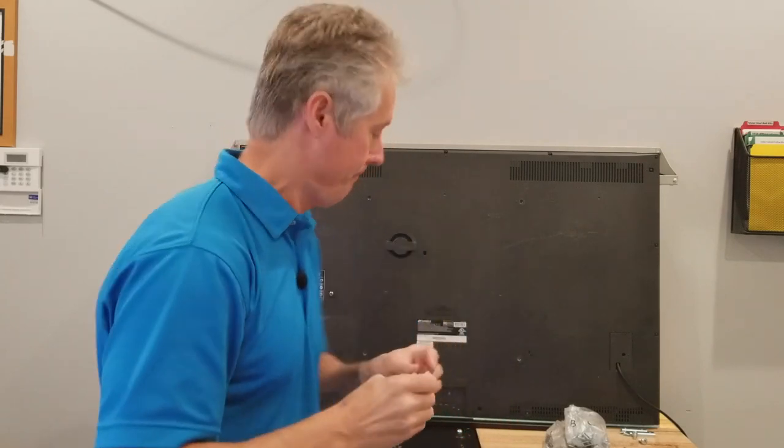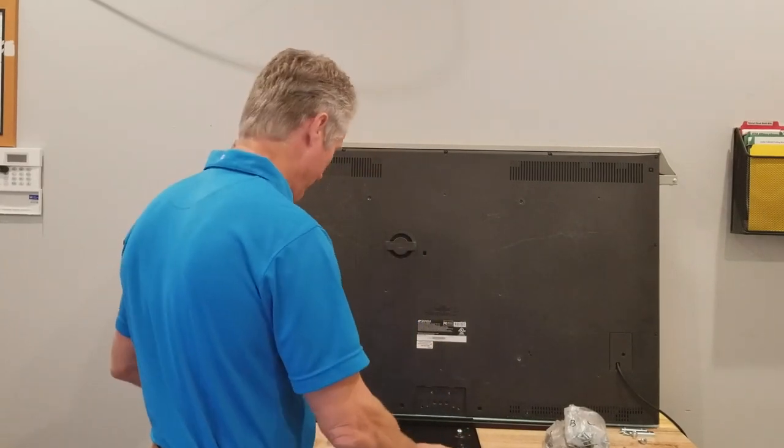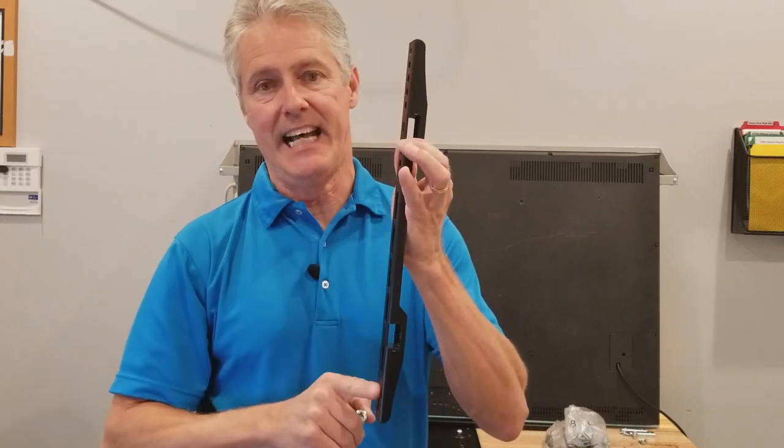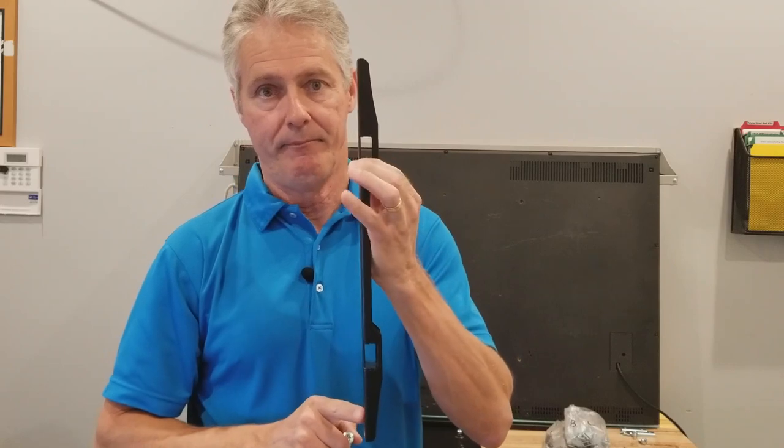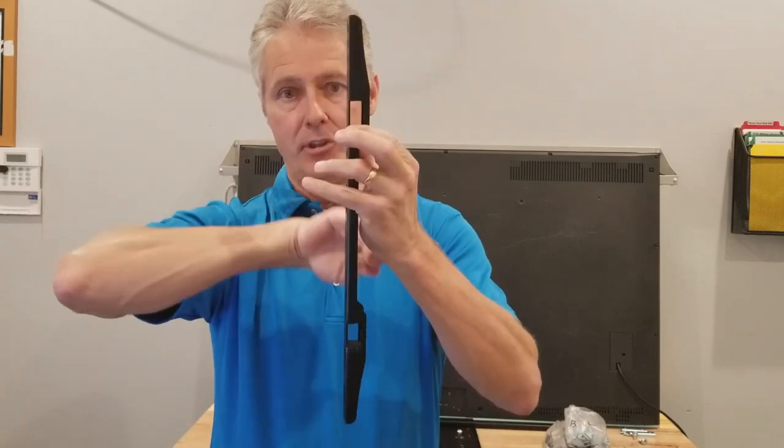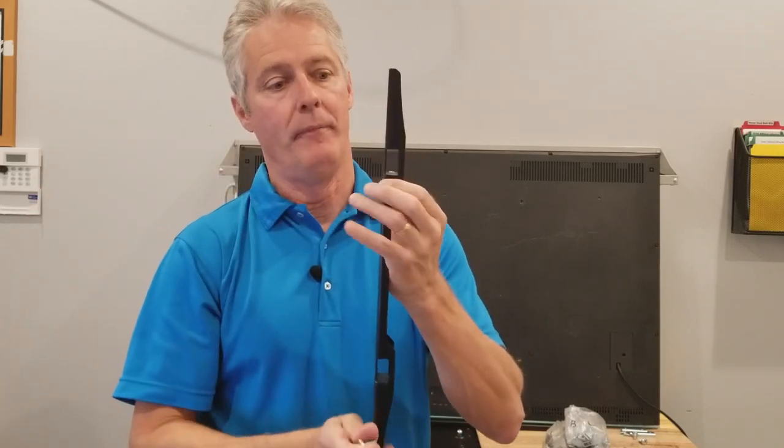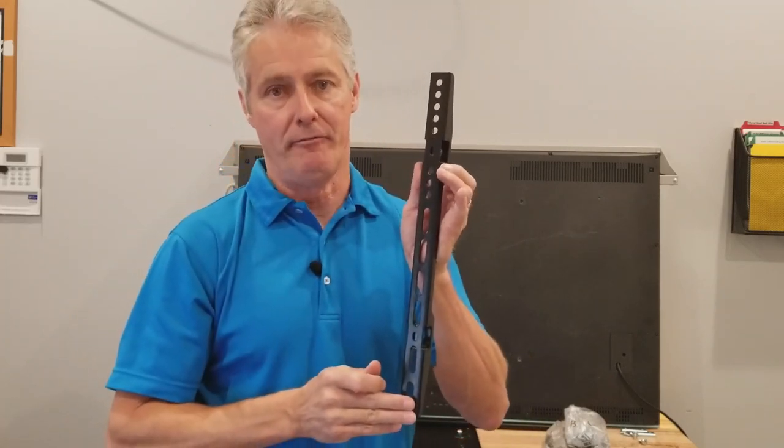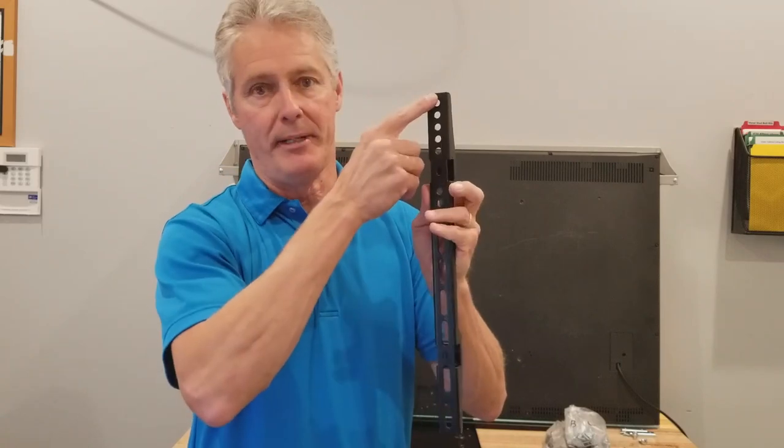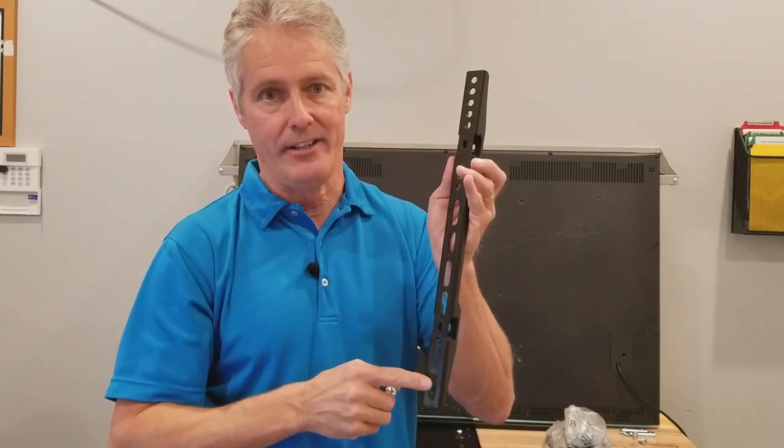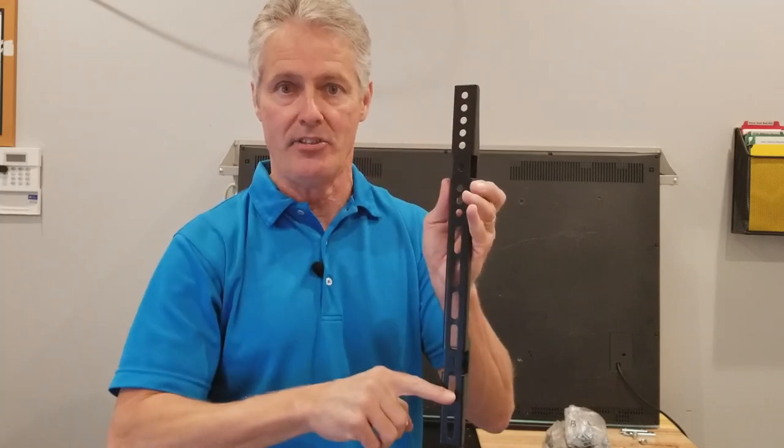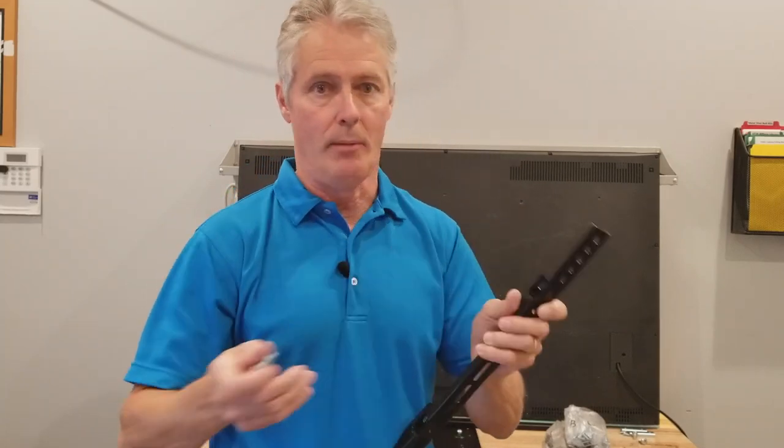Now the vertical rail—the flat side goes toward the TV, the side with the slopes goes outward toward the wall. You have holes at the top, slots at the bottom. This TV for example is going to be a VESA 400, that means I'm going to be at the top hole in the bottom slot. Your TV may fall anywhere in between that.